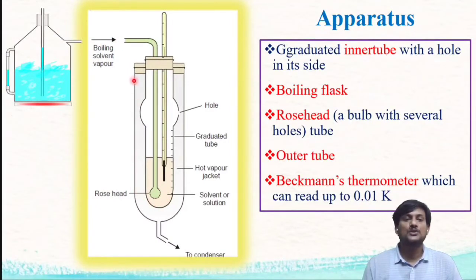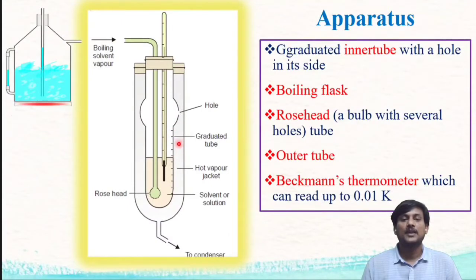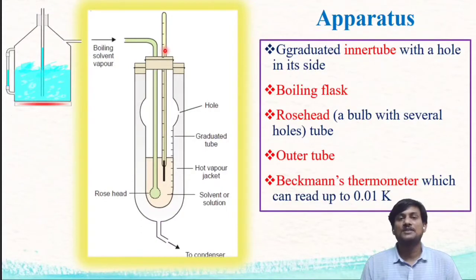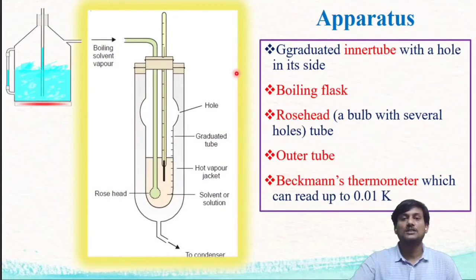There is also a large outer tube. In between the inner tube and the outer tube, there is a gap — this air gap acts as a hot air filter. In this method, we use Beckman's thermometer, which can read up to 0.01 Kelvin, allowing us to measure very small differences in temperature. This is the setup of the apparatus used in the Lansberger and Walker method.